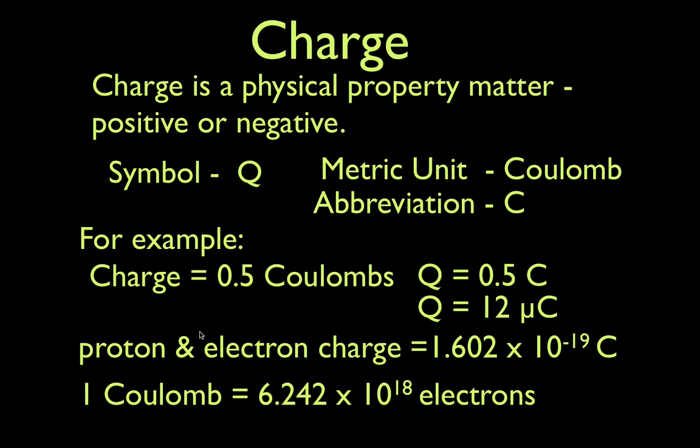That's a pretty small number, and if you want to have one Coulomb of charge, you have to have 6.2 times 10 to the 18 electrons. A Coulomb is an amount of charge. If you multiply 1.6×10⁻¹⁹ by 6.2×10¹⁸ you get one. So one Coulomb of charge is equivalent to 6.2 times 10 to the 18 electrons.